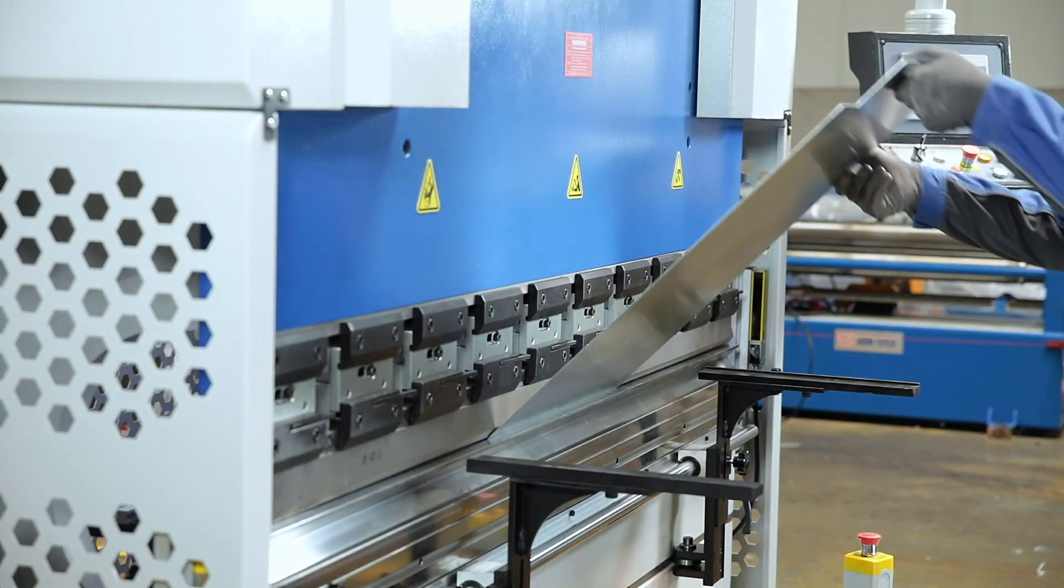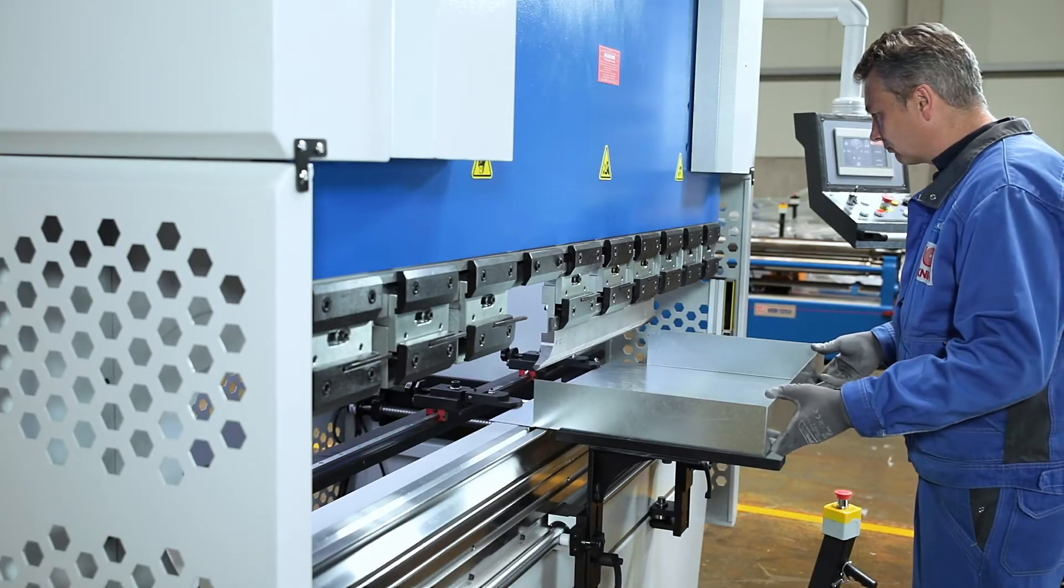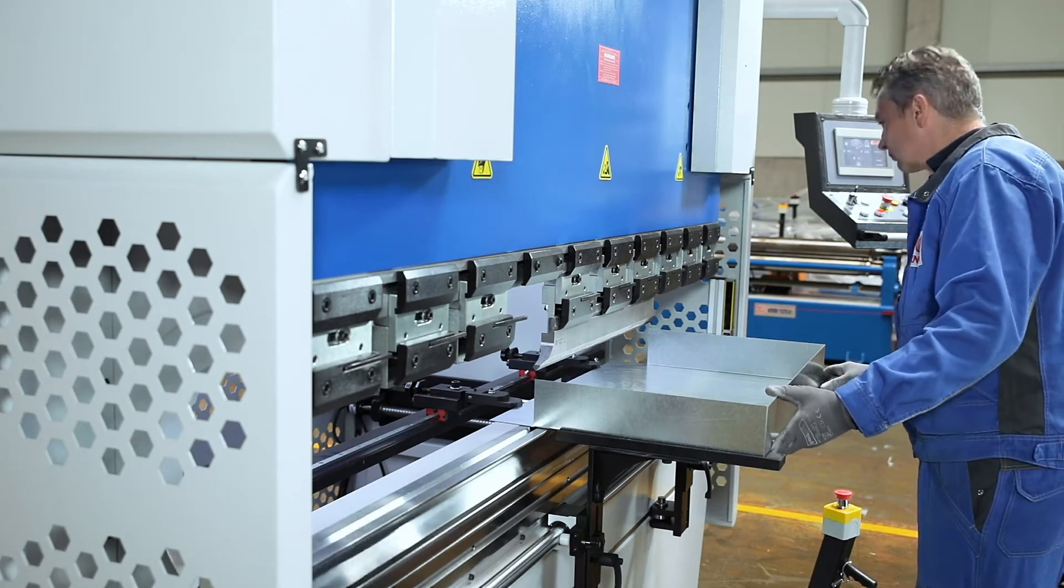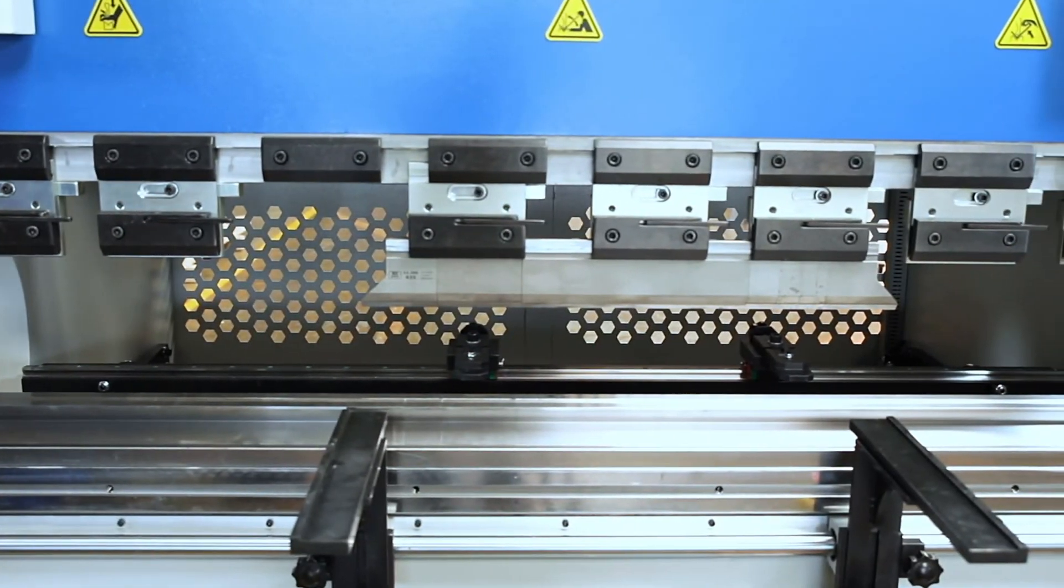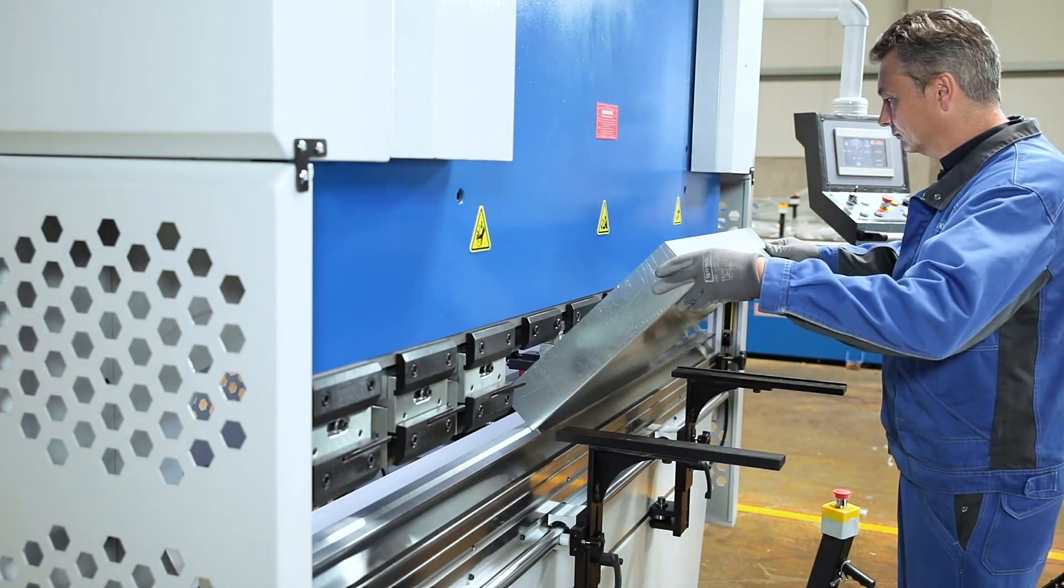Promocam tool holders guarantee a comprehensive selection of bending tools. The manual quick clamping of the tool holder ensures quick and easy tool changes. The bottom tool consists of a bending die with four sides for a wide range of workpieces.